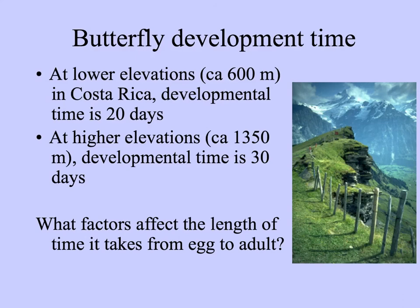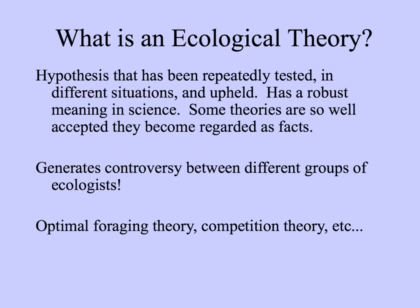What are the factors that affect the length of time it takes from egg to adult? We might make different hypotheses about that, and you could get many people suggesting different things. Any hypothesis that you suggest, test, uphold, and is repeatedly upheld can become an ecological theory. Theories generate controversy between different groups of ecologists. Any theory — optimal foraging theory, optimal defense theory for plants, competition theory — has people always thinking of new experiments and arguing about what really causes the phenomena they observe.